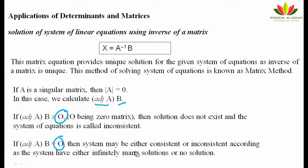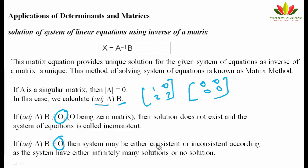If adj(A) × B is a non-zero matrix (like [1,0; 2,1]), the solution does not exist and the system is inconsistent. But if adj(A) × B equals the null matrix (i.e., [0,0; 0,0]), then the system may have infinitely many solutions or no solution — we comment on consistency accordingly. This completes the determinants chapter. Thank you.